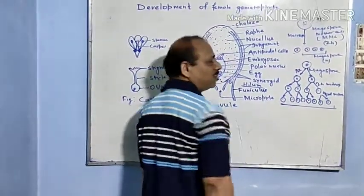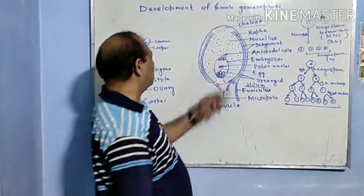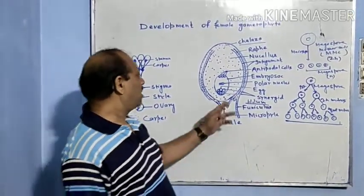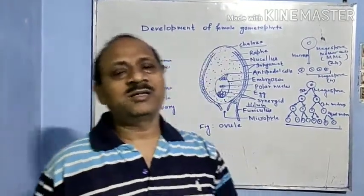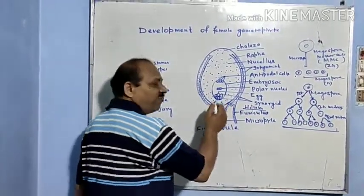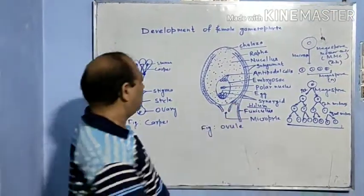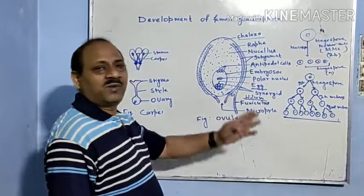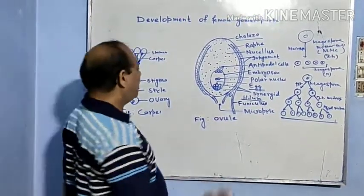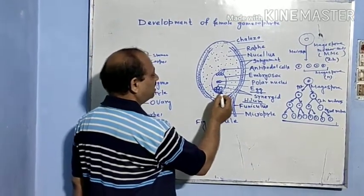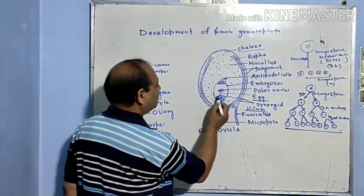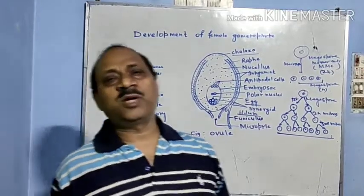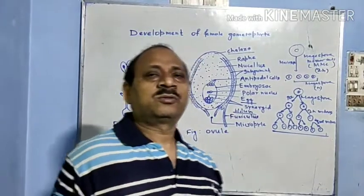These eight cells are arranged in the embryo sac. Three cells are arranged at the micropylar end and form the egg apparatus. The egg apparatus consists of a central large cell known as the egg cell, which will form the female gamete, and two side cells located laterally known as synergid cells. Synergid cells provide nourishment to the developing female gamete or egg cell.